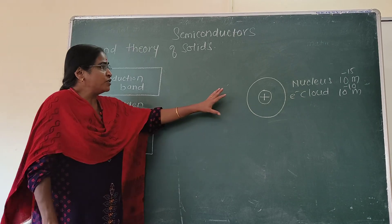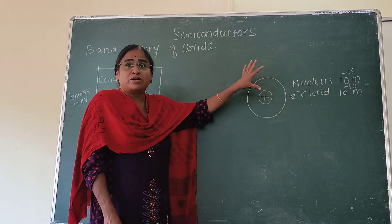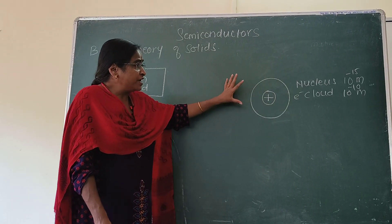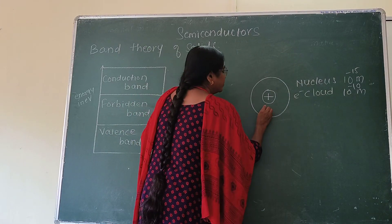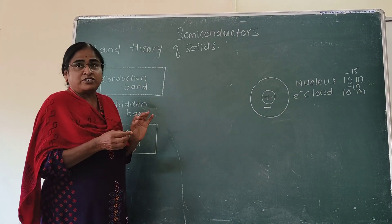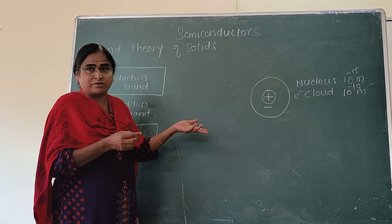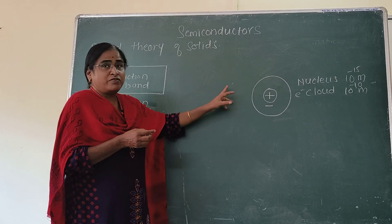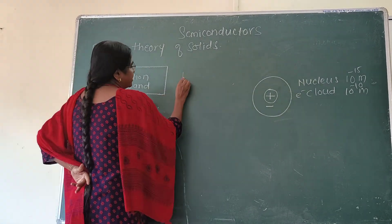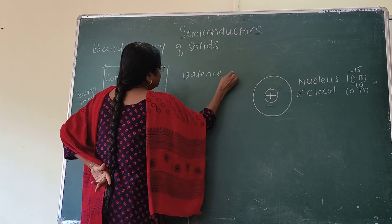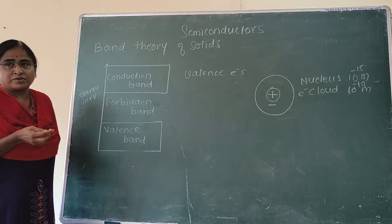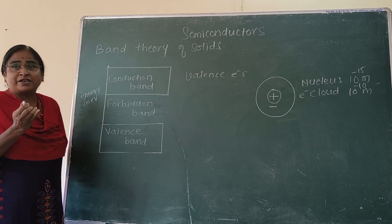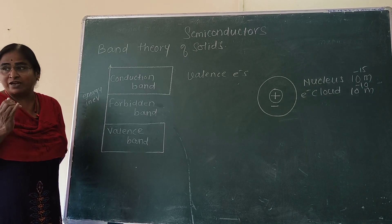Within the atom you have positive charges that is protons, and you have electrons, but the atom is electrically neutral. That is because within the atom the center of gravity of positive and negative charges coincide with each other, and so the atom is electrically neutral. The electrons revolving in the outermost orbit are called valence electrons.